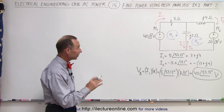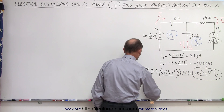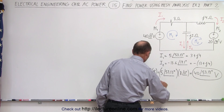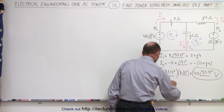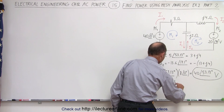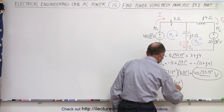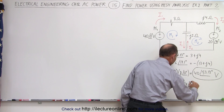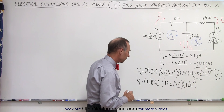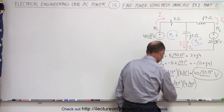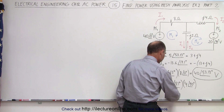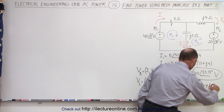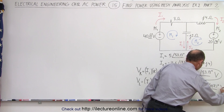The voltage across the inductor is going to be equal to the current I2 multiplied times X sub L. I2 is minus 13.6 with a phase angle of 17.1 degrees, and we're going to multiply that times X sub L. X sub L is j4, so that gives us 4 with a phase angle of 90 degrees. When we multiply that together, we get 54.4 with a phase angle of 107.1 degrees, and that's also in volts.